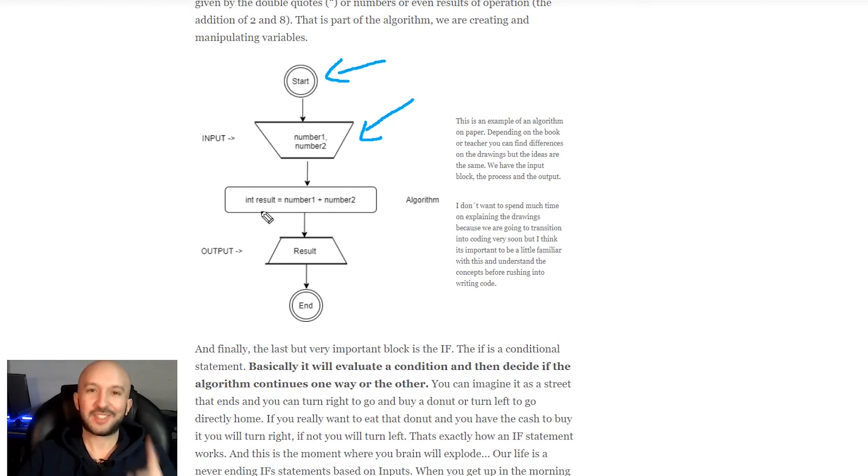In this case, we have the three of them in just one draw, right? We are doing int result is the declaration of a variable of type integer, that is a number. And then we are assigning it a value of number one plus number two, and that is an operation, because we are adding them together. And lastly, we are going to output the result, that is that variable, to the user. And this is the end of the algorithm.